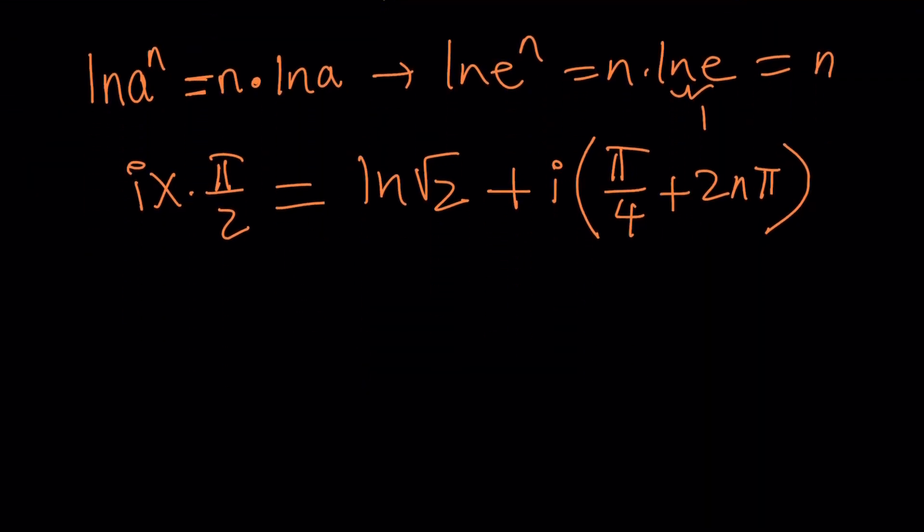Now, let's go ahead and simplify this a little bit. I could probably multiply both sides by something. But let's go ahead and do the following first. First of all, I can just write this as 1 half ln 2 because this is 2 to the power 1 half.